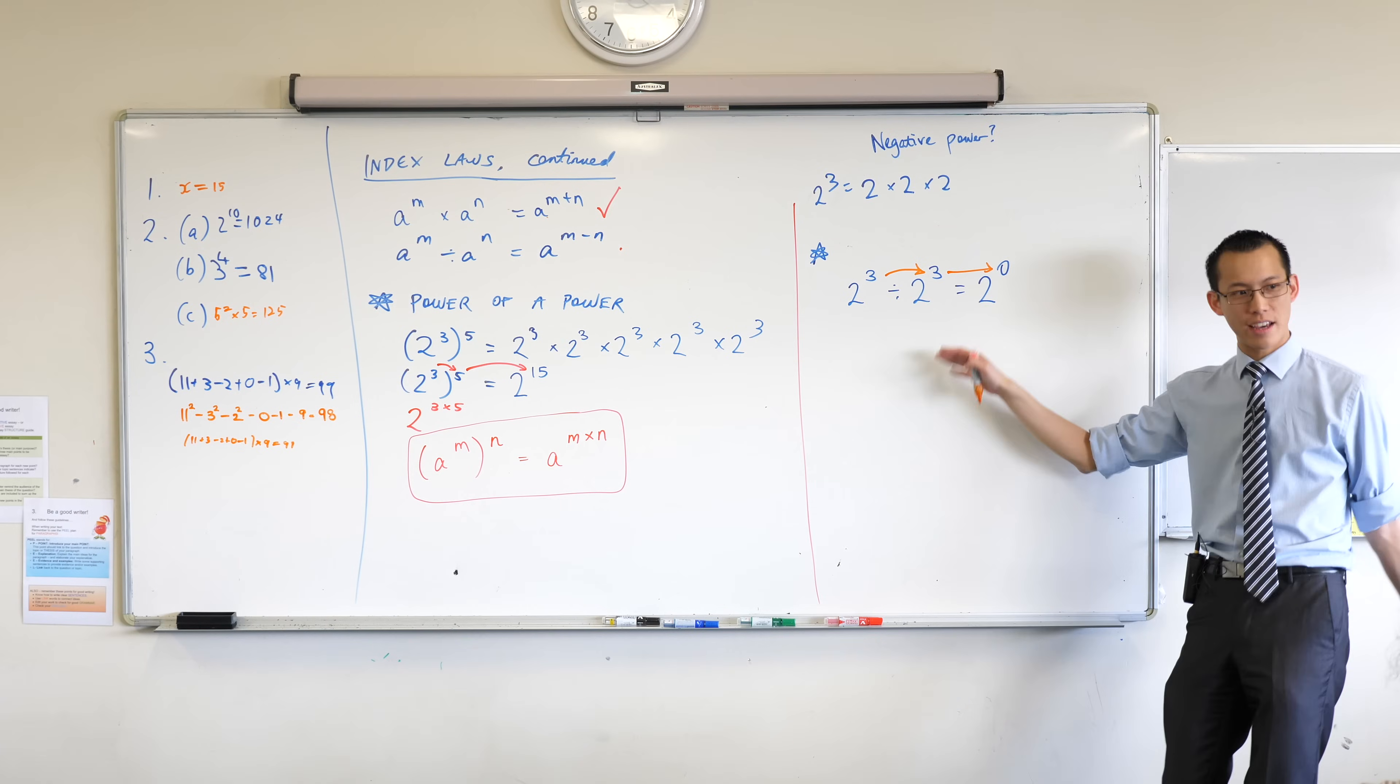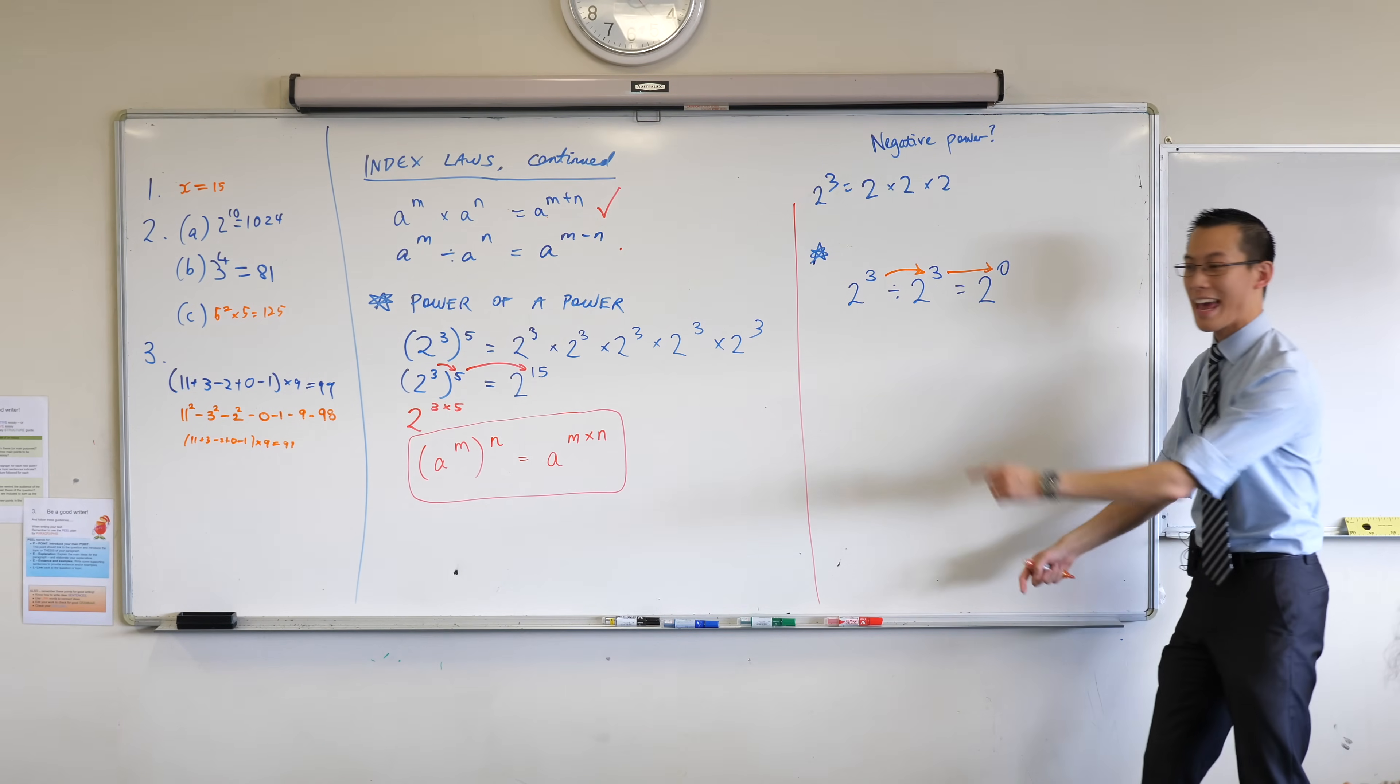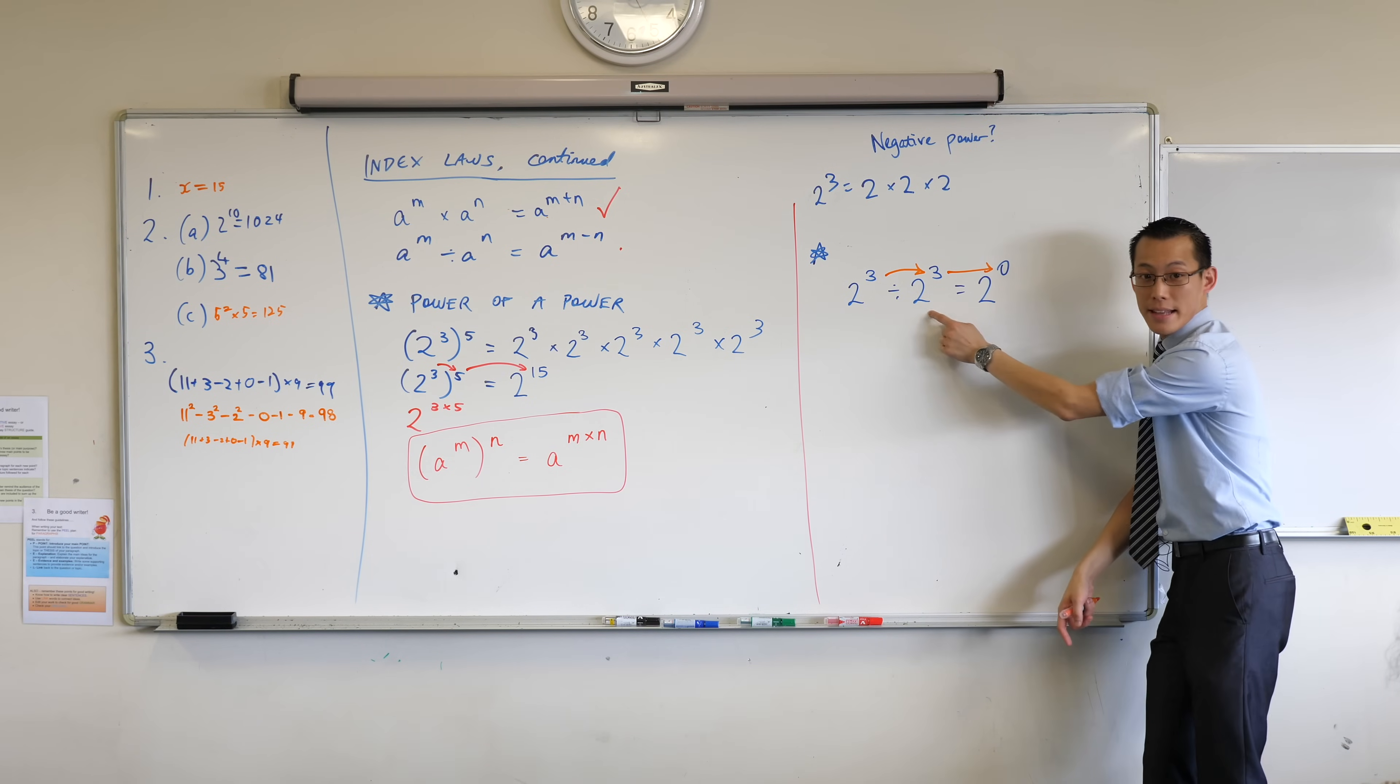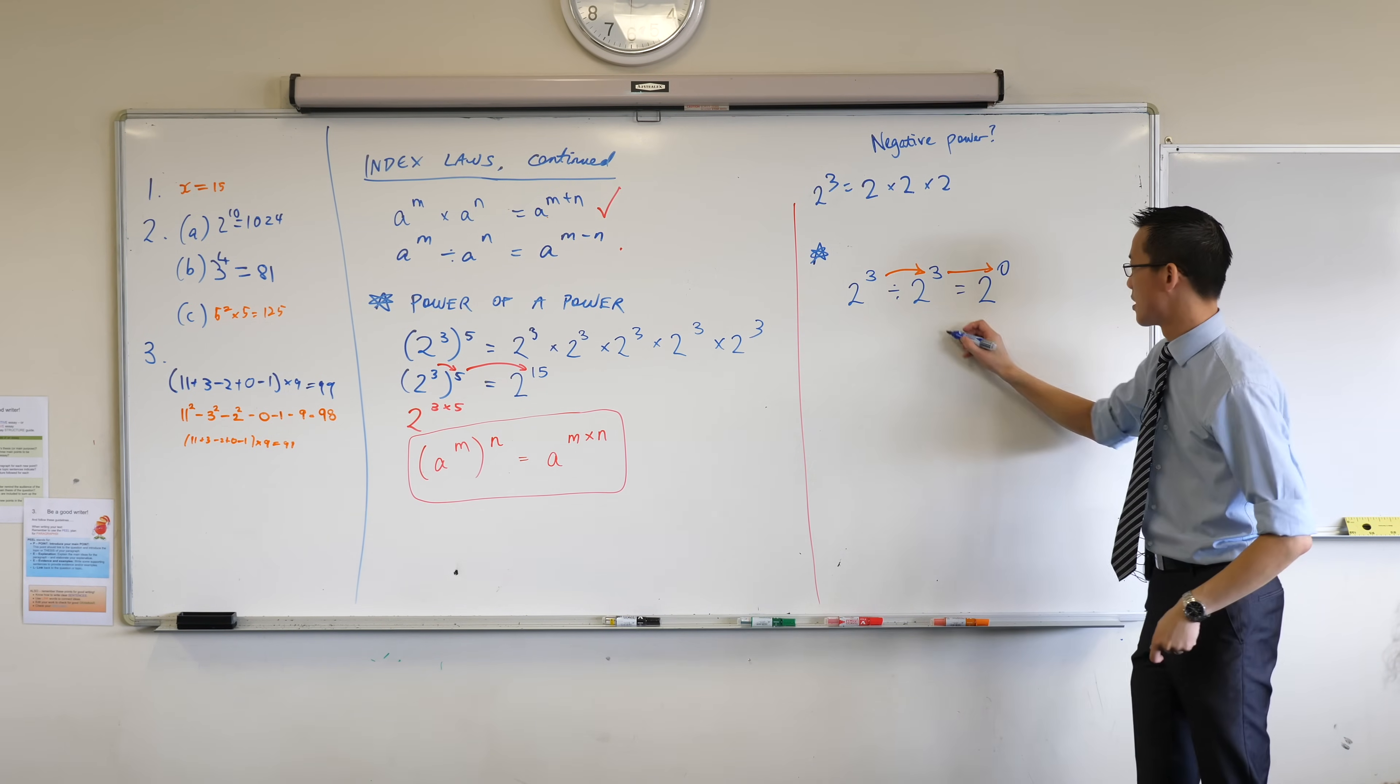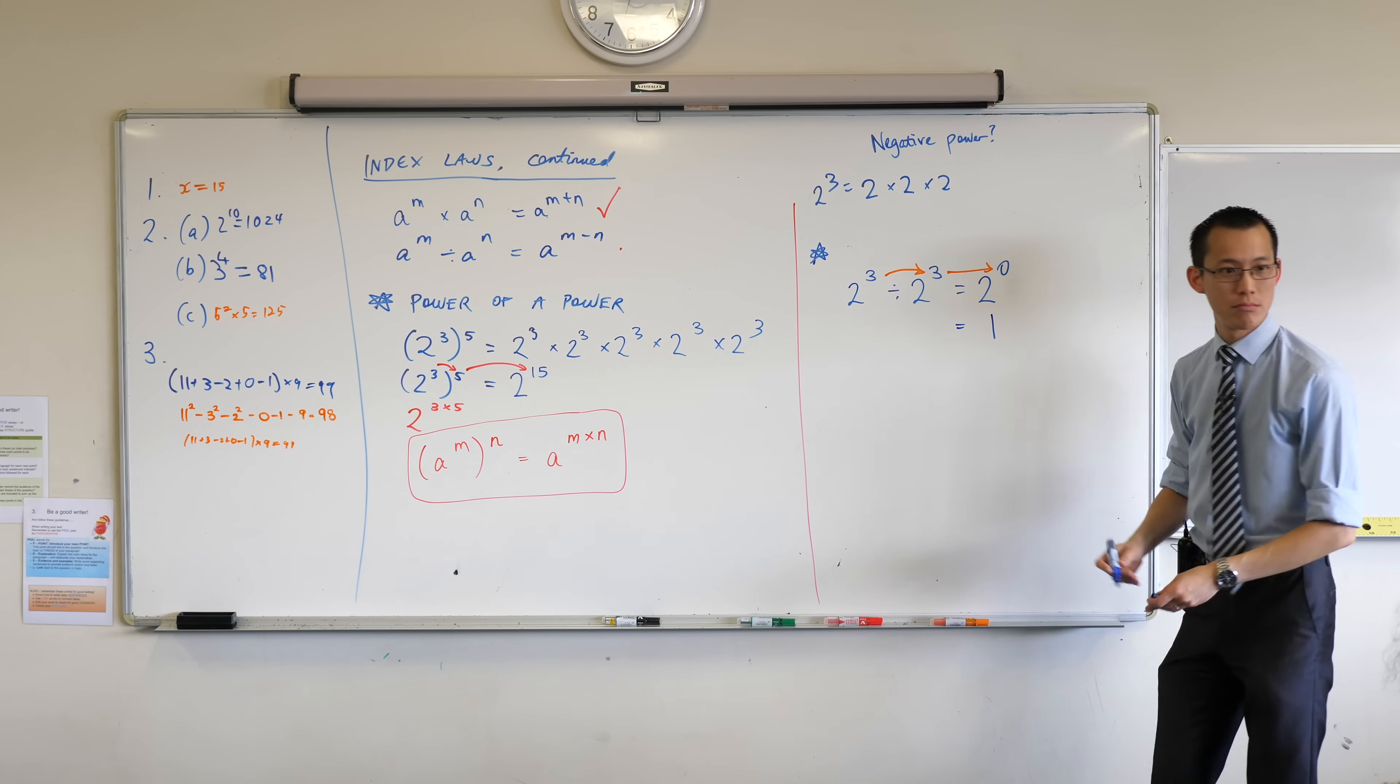In fact, if it was 8 divided by 8, or like 50 million divided by 50 million, anything divided by itself should give you 1, right? So hold on a second. What we're saying is that this is also equal to 1.